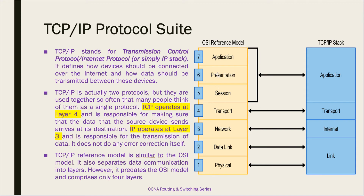If we map the OSI layers to the TCP/IP stack layers: in the TCP/IP stack the layers are called link layer, internet layer, transport layer, and application layer. The physical and data link layers of OSI map to the link layer on TCP/IP. The network layer (layer 3) on OSI maps to the internet layer on TCP/IP. The transport layer on OSI maps to the transport layer on TCP/IP. The session, presentation, and application layers on OSI all map to the application layer on the TCP/IP stack.